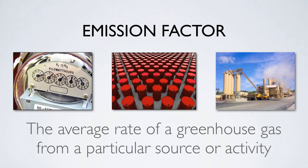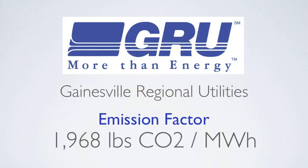For example, Gainesville Regional Utilities, a municipal power provider located in Gainesville, Florida, has an emissions factor of 1,968 pounds of CO2 per megawatt hour. This means that for each megawatt hour of electricity generated, 1,968 pounds of carbon dioxide are emitted into the atmosphere. The emission factor here is a result of the various generators supplying electricity to the utility's grid, which could be a combination of coal, natural gas, biomass, and other sources. Electric emission factors can change over time and vary per geographic location, so make sure you match up the correct utility and its most recently published emission factors for greenhouse gas inventory purposes.